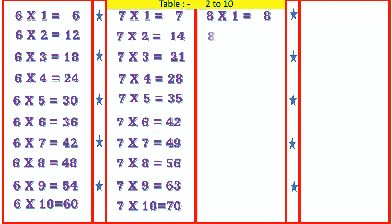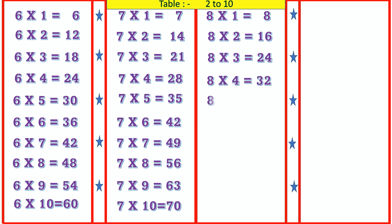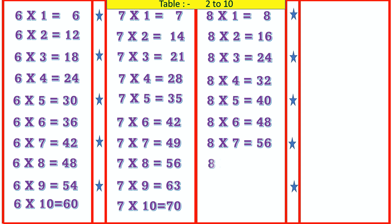8 1's are 8, 8 2's are 16, 8 3's are 24, 8 4's are 32, 8 5's are 40, 8 6's are 48, 8 7's are 56.